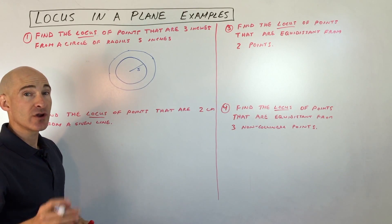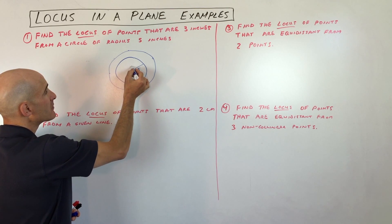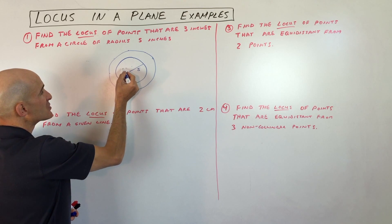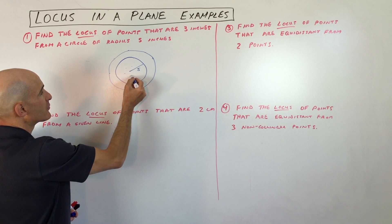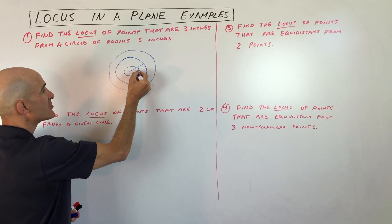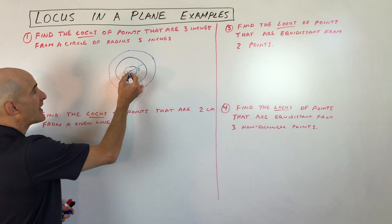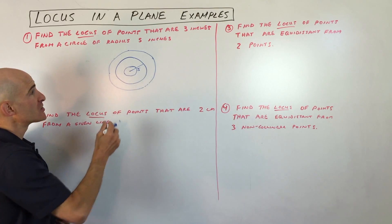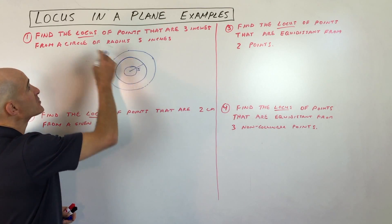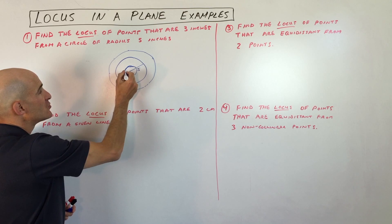At closer examination, you might realize you could also go inside — here's a point that's three inches from the circle on the inside, and over here, three inches from the edge. As you establish that pattern, you see there's another circle that's actually inside, and it has a radius of two inches. So our solution set — our locus — is these two circles.